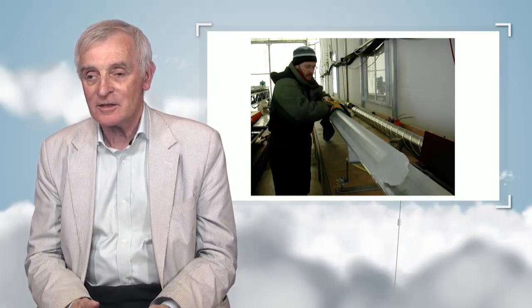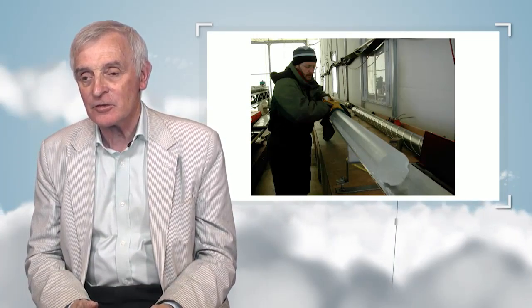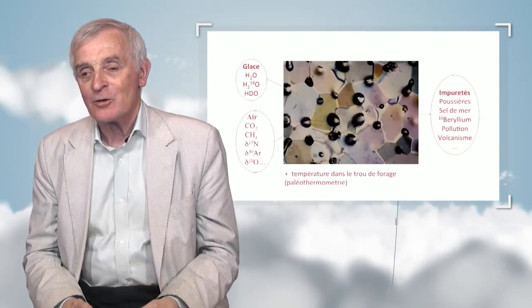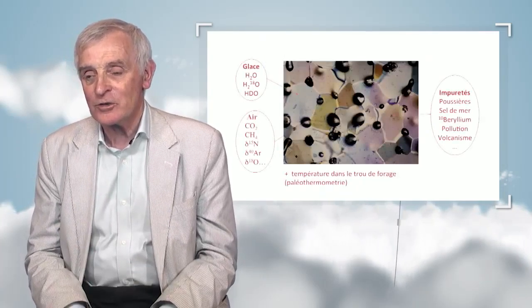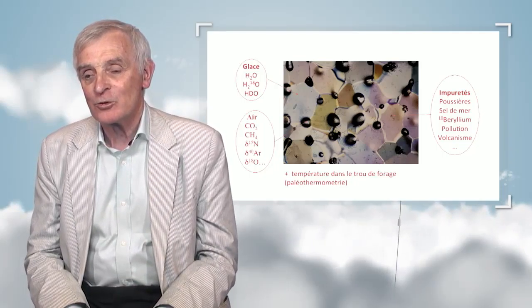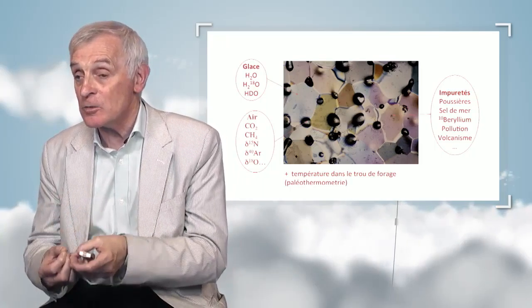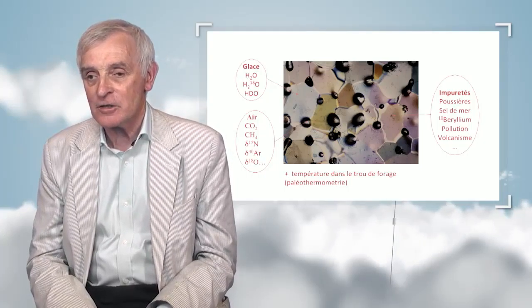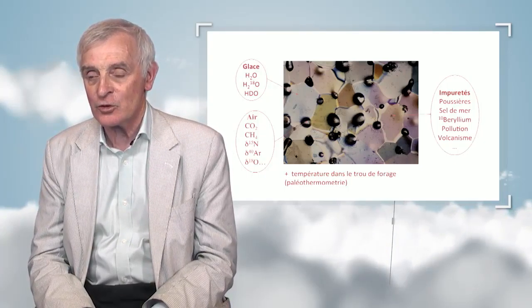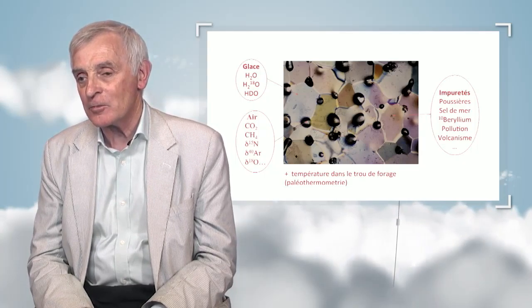Here we have a core harvested in the EPICA project in the Antarctic. The ice gives us data over 800,000 years. Three-kilometer-deep drilling cores have allowed us to reconstitute parameters. The ice tells us about temperature because it is made of isotopes — the heavy deuterium isotope from hydrogen or the oxygen isotope, oxygen-18.